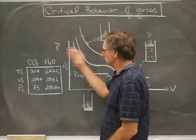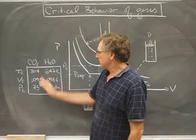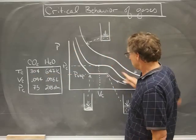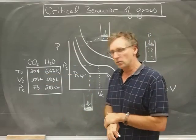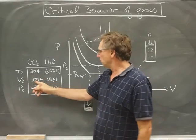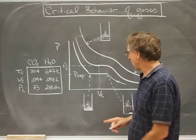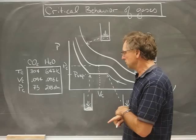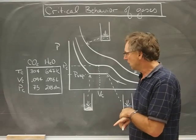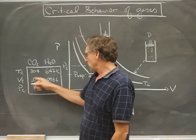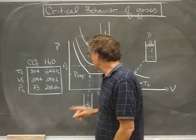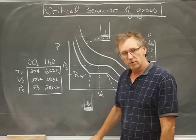So I've tabulated just two of them for you. Carbon dioxide has a critical isotherm at 304 Kelvin. The critical volume occurs at 0.094 liters, just a little bit less than a tenth of a liter. And that's on a per mole basis. And the critical pressure occurs at 73 atmospheres.